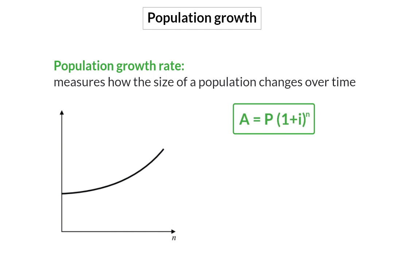For this, we're going to make use of the compound interest formula, but now P will represent the present size of the population, and A the future size, I is the population growth rate, and N the number of years.